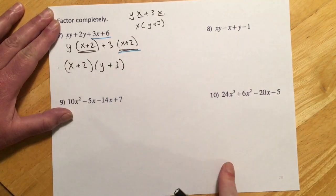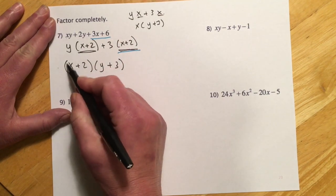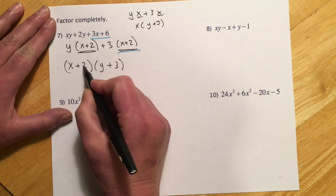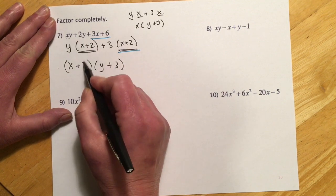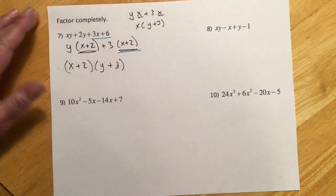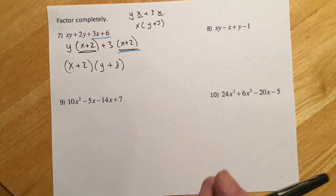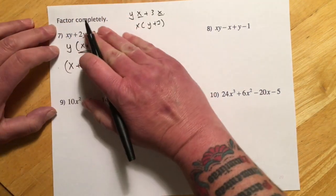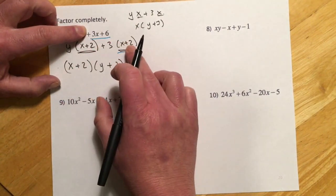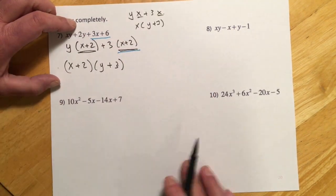You can always check factoring by FOILing back out — the outside gives xy, the outside gives 3x, the inside gives 2y, and then two times three makes six. That's the basic plan for four-term problems: group the first two, make the second two group the same way, then take that common binomial out as the GCF.